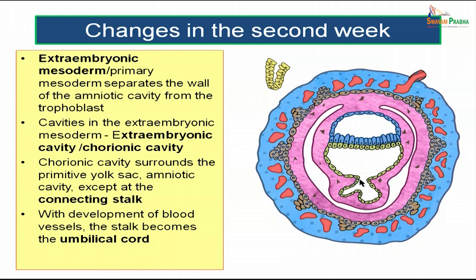There is a primitive yolk sac, and with the formation of the chorionic cavity, a part of the yolk sac is actually pinched off from the primitive yolk sac by the pull of the developing extra-embryonic mesoderm. This results in shrinkage of the primitive yolk sac — a bigger portion is pinched off and lies in the extra-embryonic mesoderm.